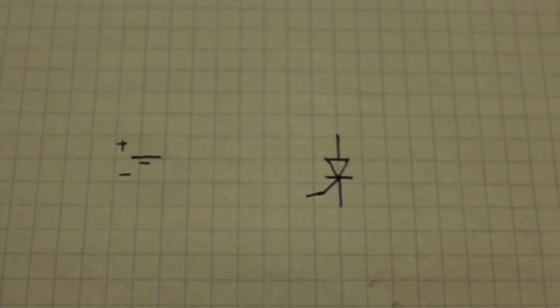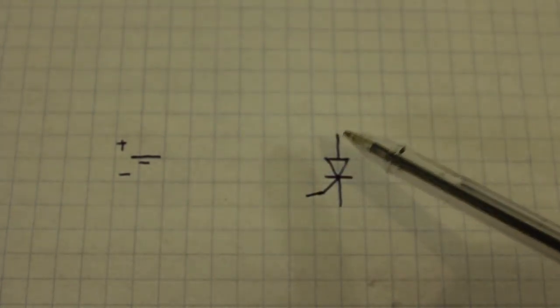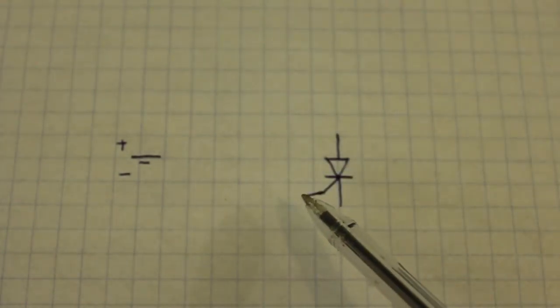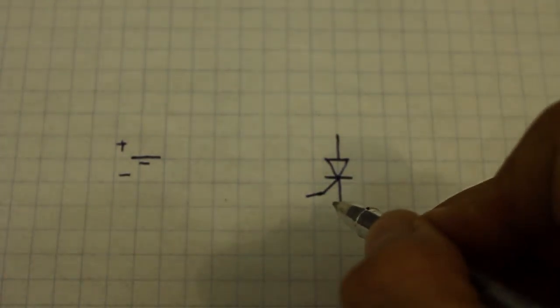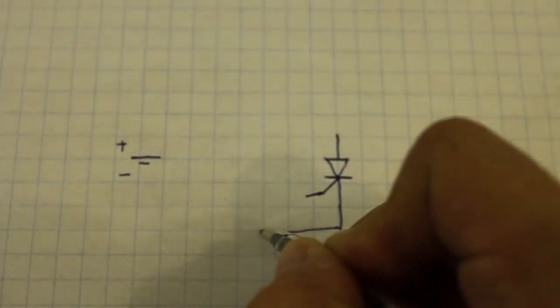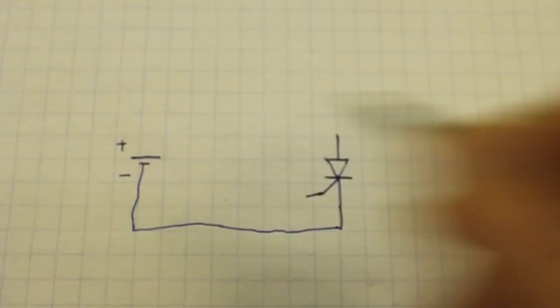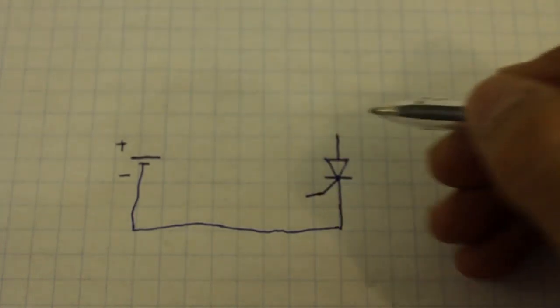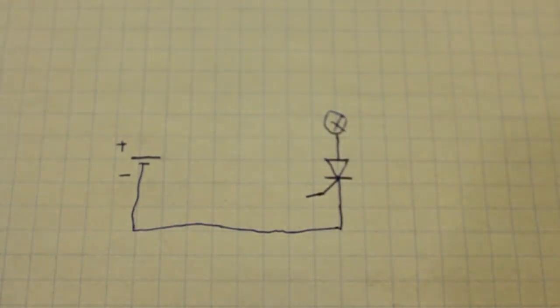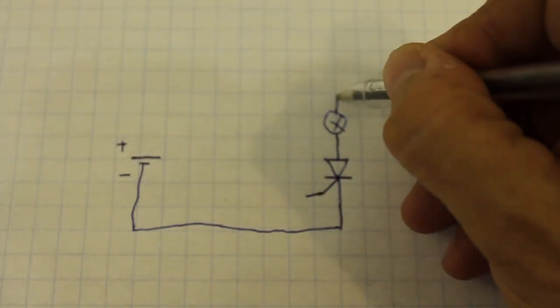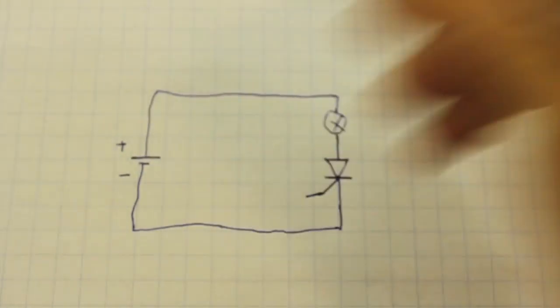This is the thyristor symbol: anode, cathode and gate. The way in which it works is simple. You connect the cathode to the negative of your battery or power supply. In the anode you can put a load, for example a lamp, and then connect to positive.